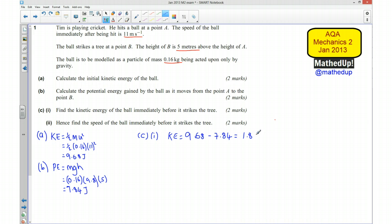So that's going to tell me my kinetic energy at this particular point is going to be 1.84 joules. So just before it hits the tree, or as it strikes the tree, we're going to have a kinetic energy of 1.84 joules. Just to clarify what I've done there, I've said that this is the kinetic energy lost because it's the potential energy that's been gained.